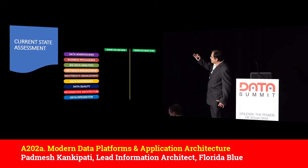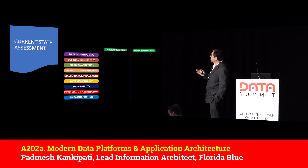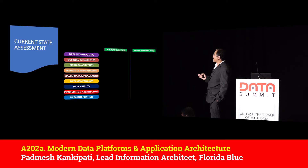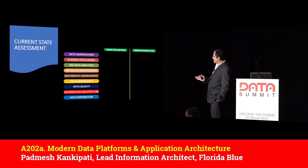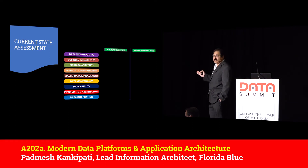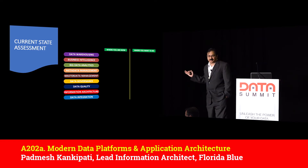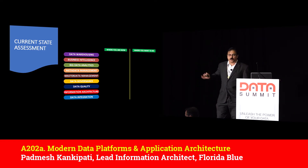In the current state assessment as a next step, you look at your technology stack and various domains — where you are in data warehousing, business intelligence, governance, data quality, information architecture, data integration, analytics, metadata management, and master data management. You assess where you are today and where you want to go.